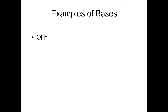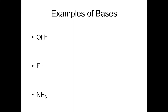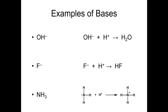What are some examples of bases? Hydroxide is an obvious example. Fluoride is another example of a base because it has a negative charge and therefore could accept an H⁺. Ammonia is a base that we'll talk about a fair amount — it does not have a negative charge. In the case of hydroxide, it can accept a proton to give you water. Fluoride can accept a proton to give you HF, hydrofluoric acid. Ammonia has a structure in which a nitrogen is bonded to three hydrogens with a non-bonding pair of electrons; that non-bonding pair can be used to accept an H⁺ and form a bond to give you the ammonium ion.